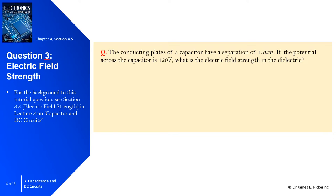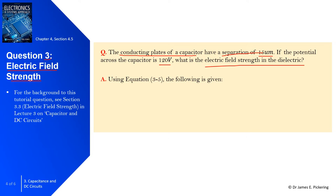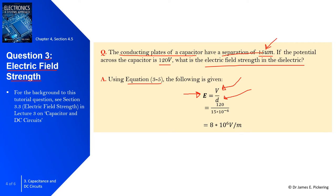In question 3 we're going to look at electric field strength. The conducting plates of a capacitor have a separation distance of 15 micrometres. If the potential across the capacitor is 120 volts, what is the electric field strength in the dielectric? Using equation 3.5, we use capital E in bold to denote electric field strength — we put it in bold because we also use capital E for EMF. E equals V over d, which is 120 divided by 15 times 10 to the power minus 6, giving 8 times 10 to the power of 6 volts per metre.